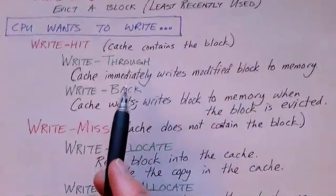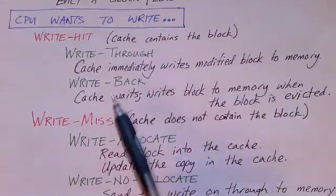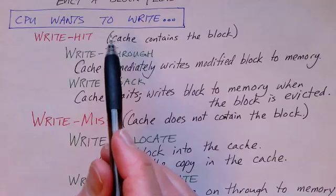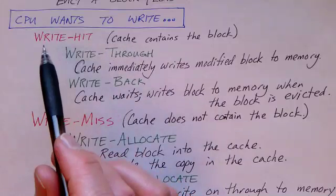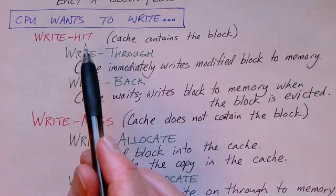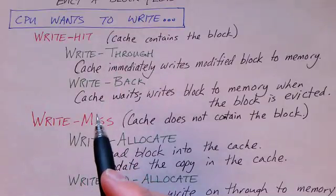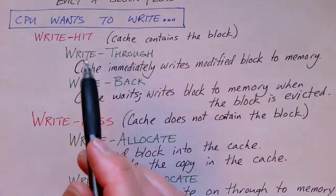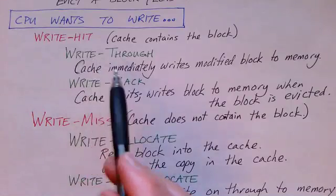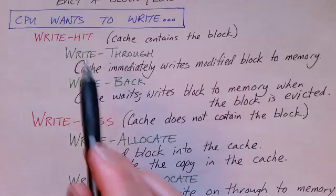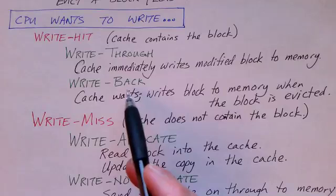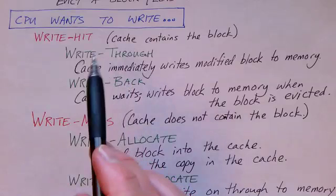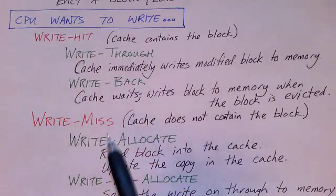Now what happens if the CPU wants to write to memory? There are again two possibilities: the cache contains the block, which is a write hit, or the cache does not contain the block, which is a write miss. On a write hit there are two approaches: write through and write back. These are design decisions made when the cache is designed — once manufactured, it's going to be either a write through cache or a write back cache. Similarly, write allocate and write no allocate are fixed design decisions.